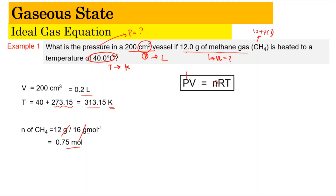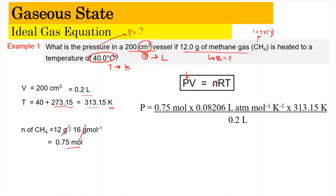Substituting our values into P = nRT/V: n = 0.75 mol, R = 0.08206 L·atm per mol per K, T = 313.15 K, and V = 0.2 L. Mole and per mole cancel out, litre and litre cancel out, and per Kelvin and Kelvin cancel out, leaving us with a unit of atm for pressure. Once we do the maths, we get 96.47 atm.